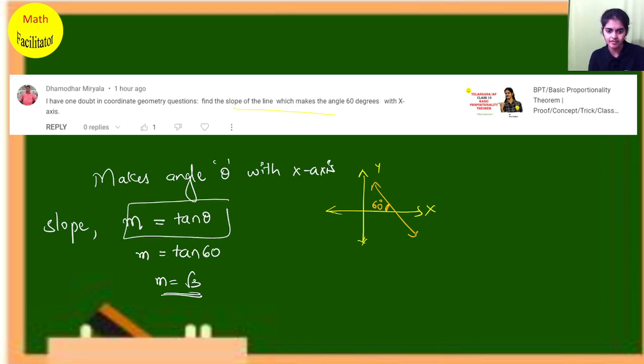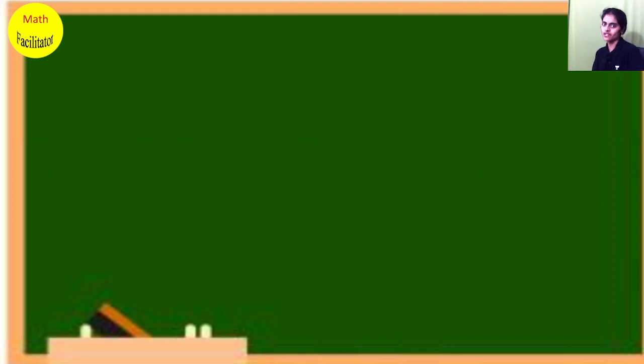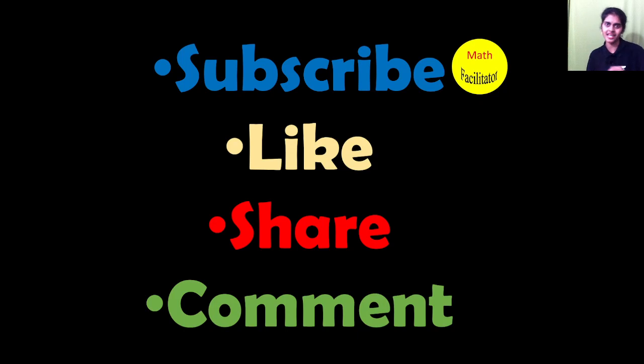So always remember, slope of the line is given by tan theta, where theta is the angle which is made by the line with x axis. So people, if you also have any questions like this, you can ask me and you will get the solutions in your doubts, my solution series.